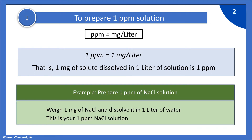Example: prepare 1 ppm of NaCl solution. To prepare 1 ppm of NaCl solution, we weigh 1 mg of NaCl and dissolve it in 1 litre of water. So this is your 1 ppm NaCl solution.